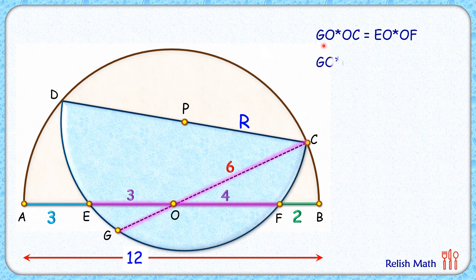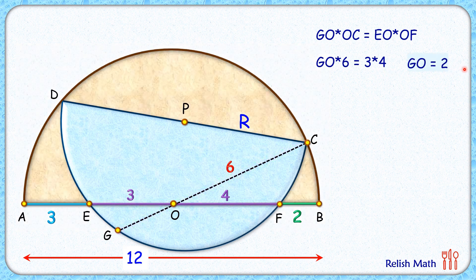Putting the values, we get GO times 6 is 3 times 4. Solving it, GO is 2 cm. So this length GO is 2 cm.